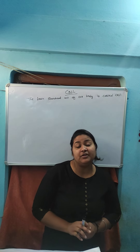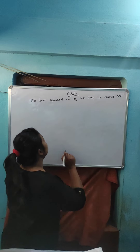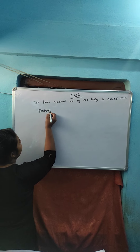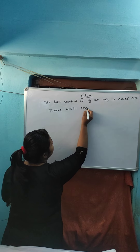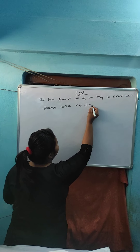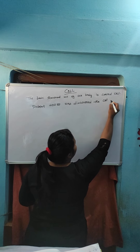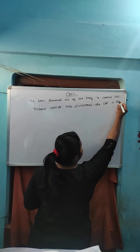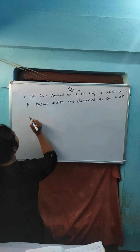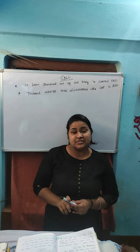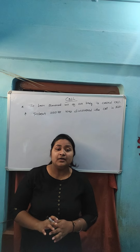The next topic is the discovery of the cell. Who discovered the cell? Robert Hooke discovered the cell in 1665. Robert Hooke in 1665 observed a slice of cork under a simple magnifying device.